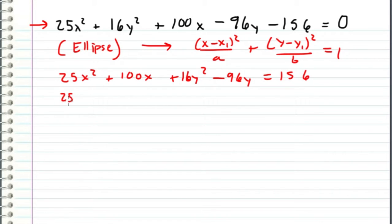And now what I'm going to do is factor out a 25 from the x squared. So I get this. And then I'm going to factor out a 16 from the y squared, which gives me this.